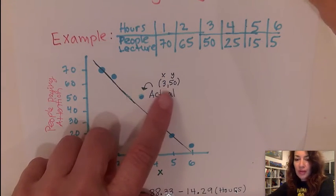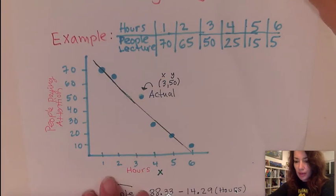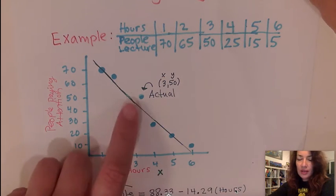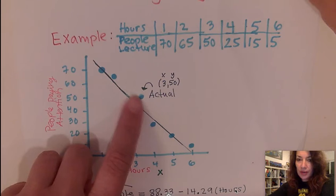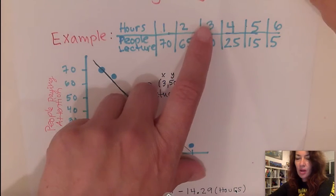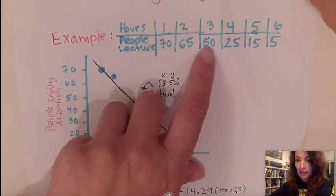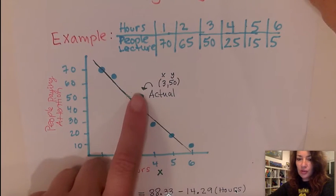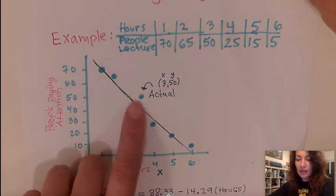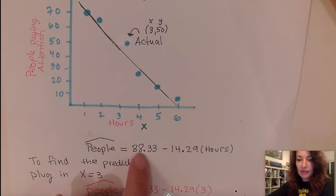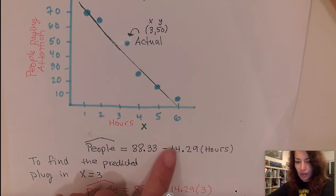So here is our scatter plot and we have our line of best fit. I'm going to calculate a residual, an example of one point. So this is an actual point right here. We could see it in the table. When the time is three hours, there will be 50 people left in the lecture. So here is our point. We have our best fit line. The equation of the best fit line is given by the following below here.